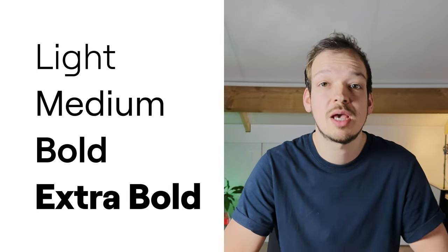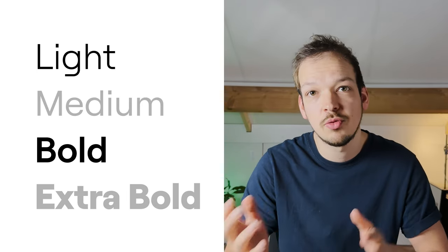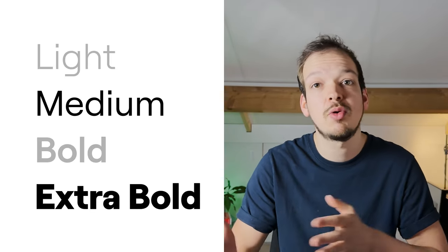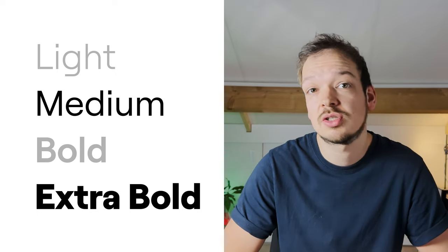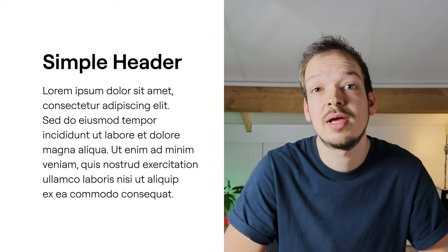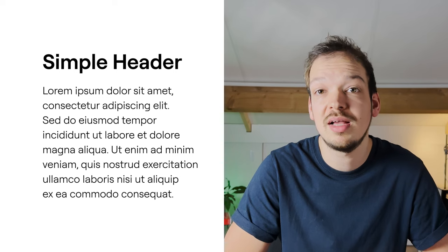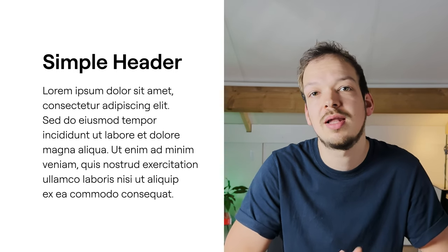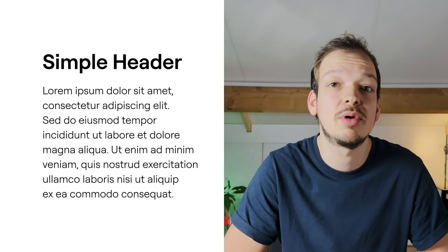When it comes to text weight, always aim to skip one weight when altering font weights — shift from light to bold or from medium to extra bold. The key here is contrast; subtle variations in weight might go unnoticed, diminishing the impact of your design. For headings, consider employing a bold weight to command attention, while opting for a lighter weight in the body copy to enhance readability. The interplay of bold and light fosters a dynamic and visually engaging reading experience.